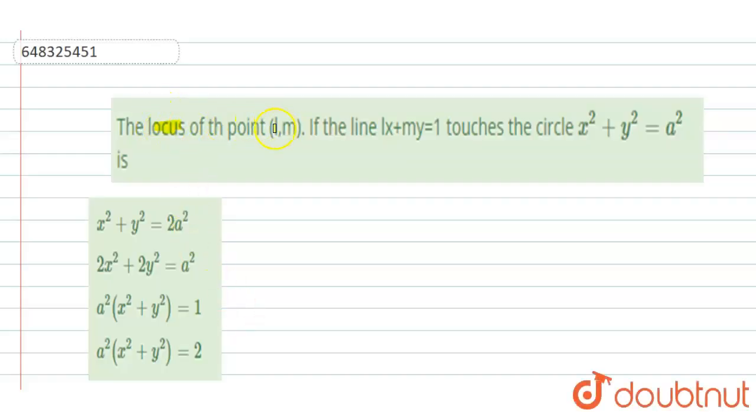Hello everyone, our question is: the locus of a point (l,m) if line lx + my = 1 touches the circle x² + y² = a² is. Four options are given to us: first is x² + y² = 2a², second is 2x² + 2y² = a², third is a²(x² + y²) = 1, and fourth is a²(x² + y²) = 2.